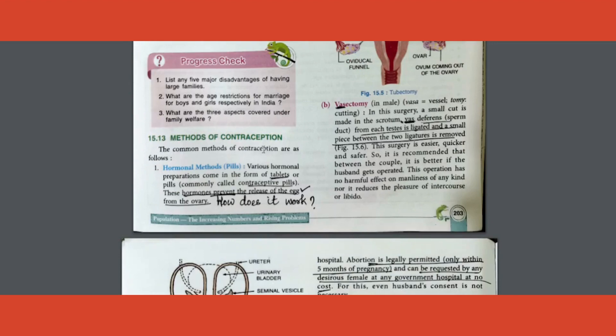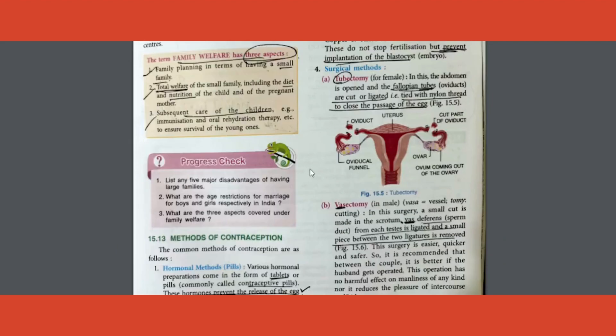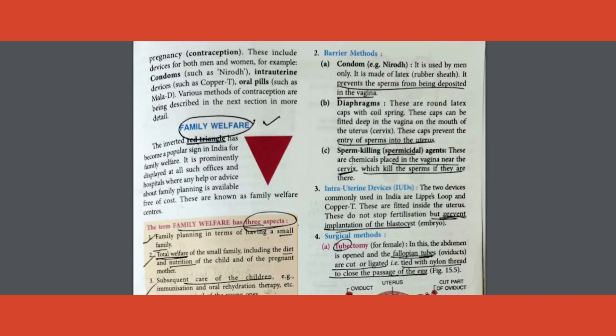After that, methods of contraception are given. First and foremost, what is contraception? Prevention of a pregnancy. There are different methods given. What you should focus on is how does it work, or the principle of working. Hormonal pill prevents release of egg from the ovary. Mark that. Same way for everything. A barrier method, eventually what does it do? It prevents the sperm and the egg from meeting.